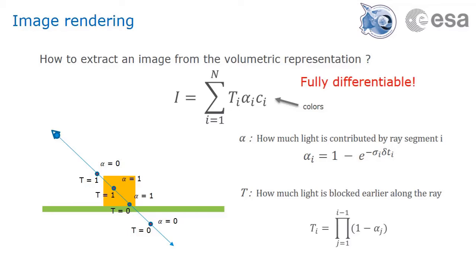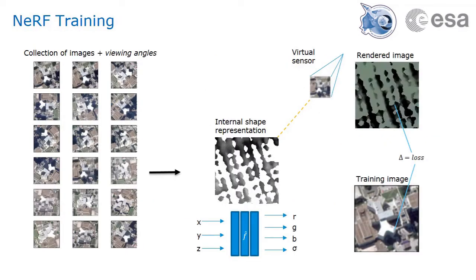The advantage of this formulation is that it is fully differentiable, which allows for automatic backpropagation through the neural network. The training of a neural radiance field is entirely self-supervised. It requires no ground truth information regarding the shape of the scene.